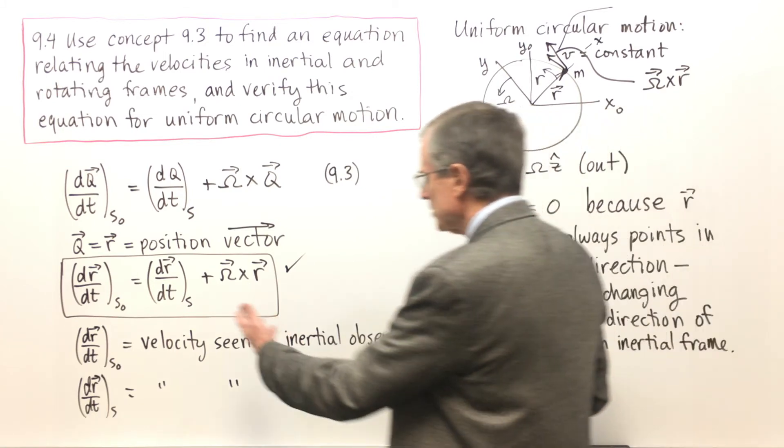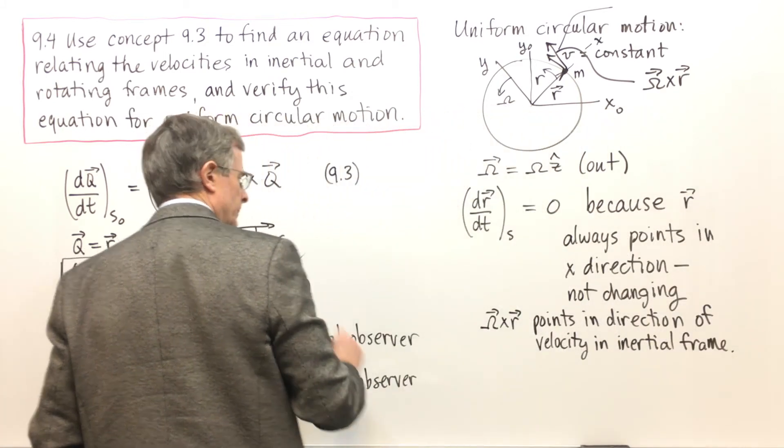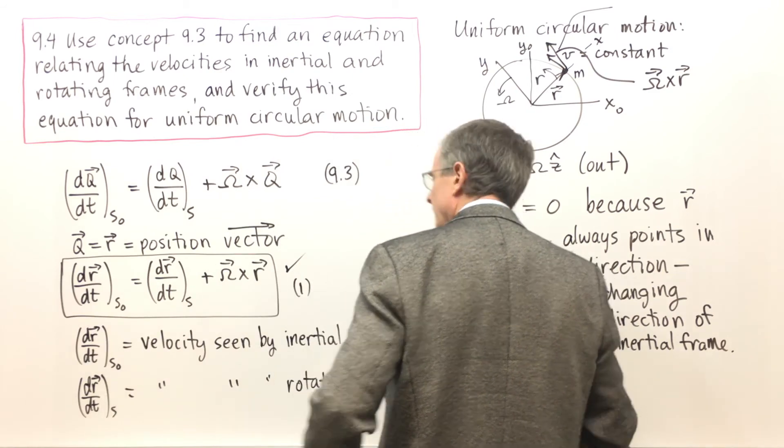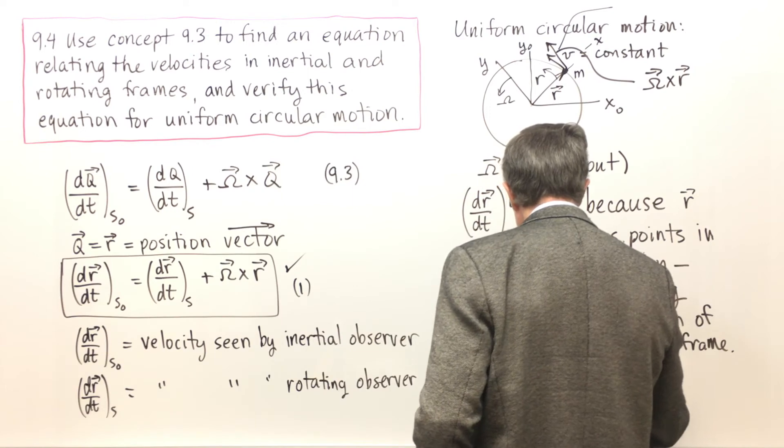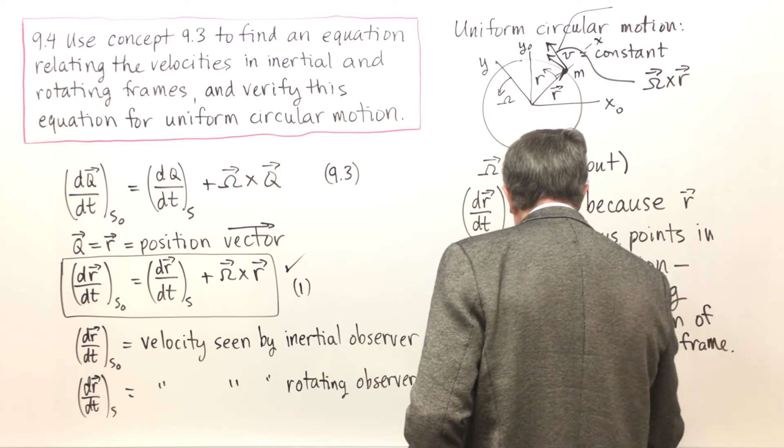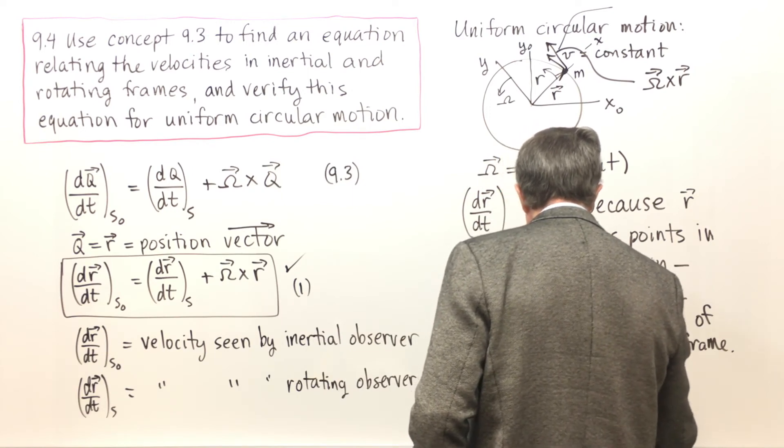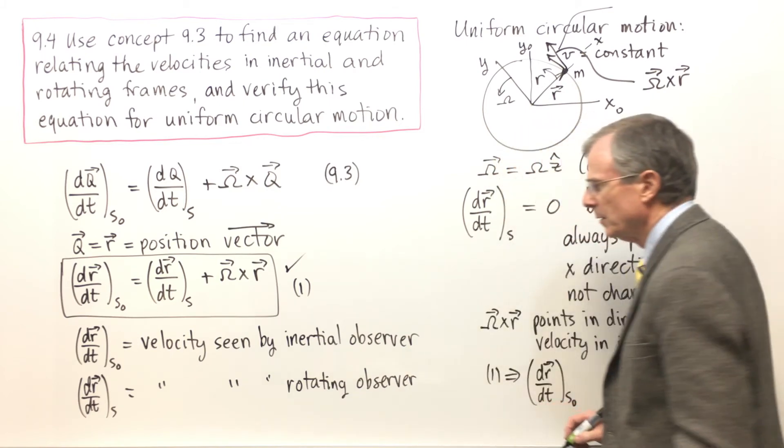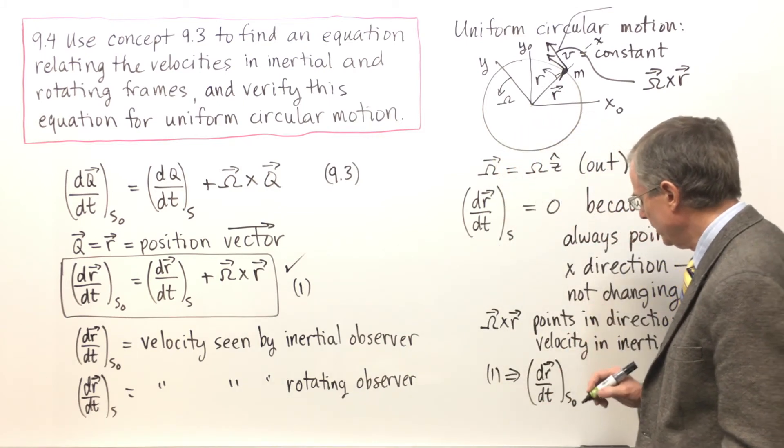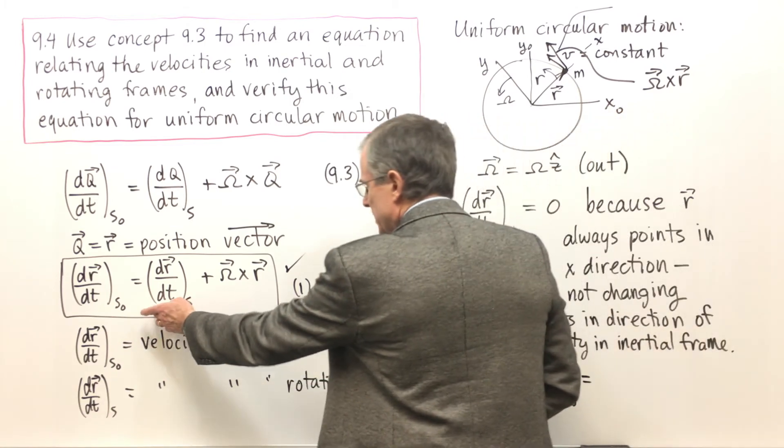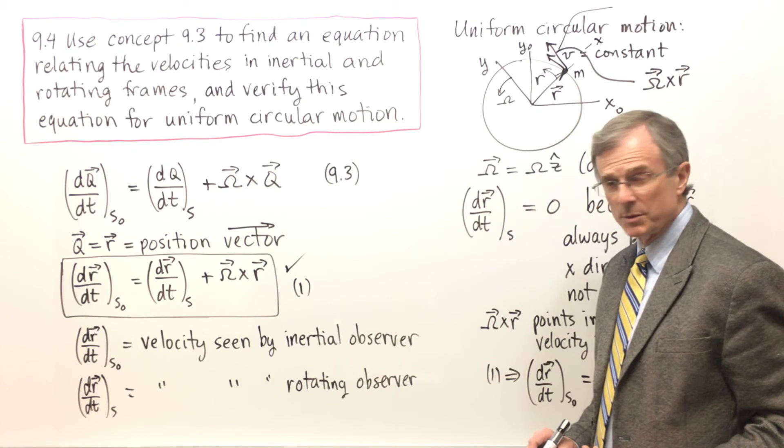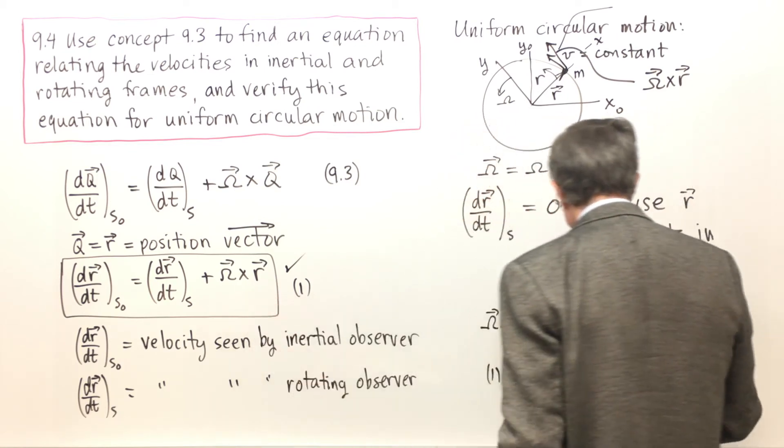So this equation, equation one, says that dR/dt, the velocity as seen by the inertial observer, equals, since dR/dt in the rotating frame is zero, just omega cross R.